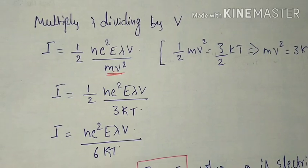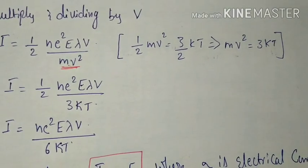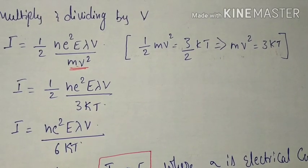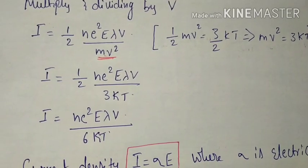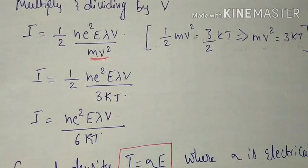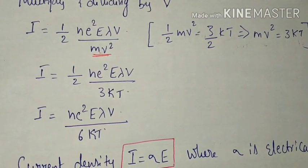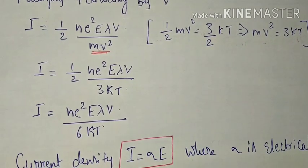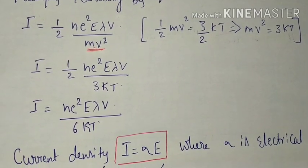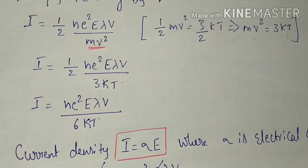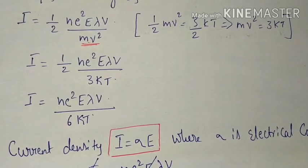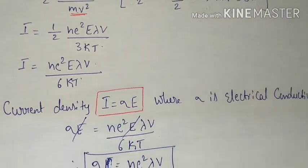Since (1/2)mv² equals (3/2)k_B·T by kinetic theory, we can write mv² = 3kT. Substituting in place of mv², the expression becomes i = (1/2)·n·e²·E·lambda·v / (3kT), which simplifies to i = n·e²·E·lambda·v / (6kT).